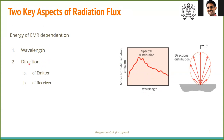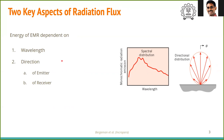The second important aspect is direction. The emitter can emit radiation at different intensities in different directions, so the direction of the emitter becomes an important aspect. Similarly, the direction of the receiver matters — if the receiver is in a different direction, it might receive different intensities. So both direction and wavelength are key aspects of handling radiation fluxes.